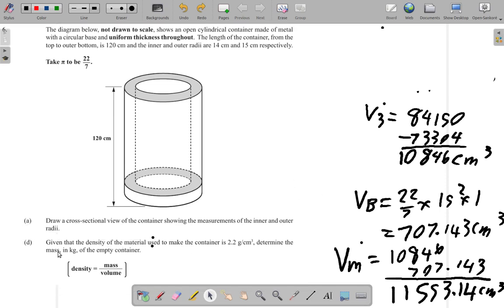Now part D says: given that the density of the material used to make a cylinder is 2.2 grams per cm³, determine the mass in kilograms of the empty container. Density is mass divided by volume. They want the mass in kilograms of the container.